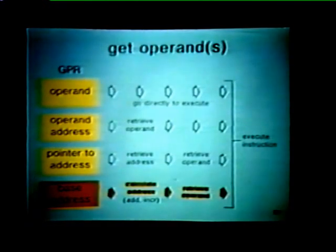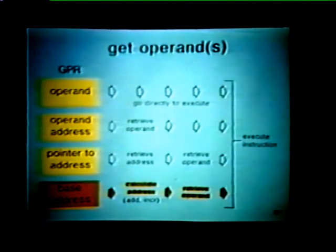In this fourth and final example, the GPR contains a base address. Before retrieving the operand, the processor must first use this base address to calculate the actual or effective address of the operand — for instance, by adding a value to the base address or simply incrementing it. Once the actual address is calculated, the processor uses it to retrieve the operand from memory or from an IO register.